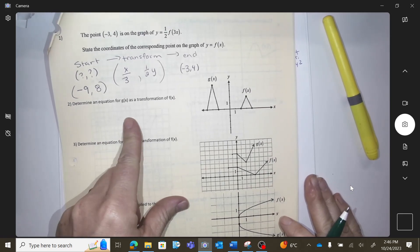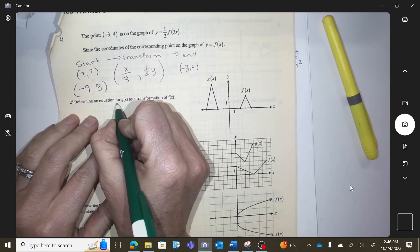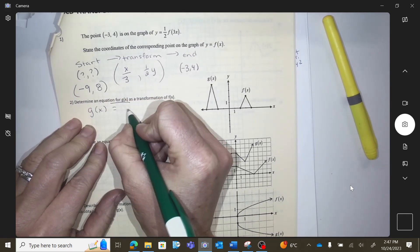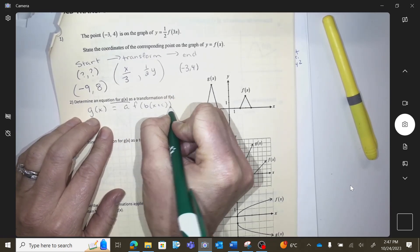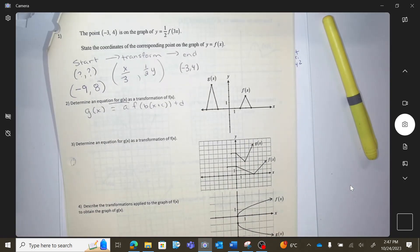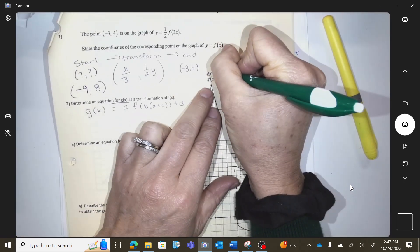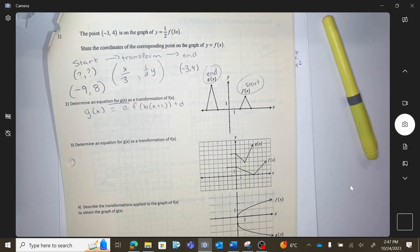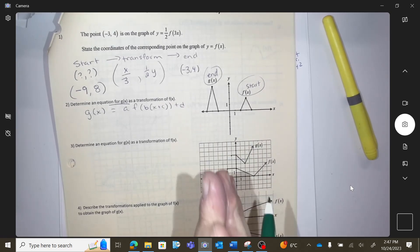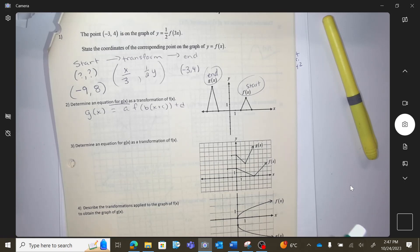So we're going to do the same thing we did in our notes here. We're going to get the equation for g of x as a transformation of the f of x. So if you want, we start at f and we get to the g. So I'm going to think about the order. From f to g, do you see anything that would be a reflection, a compression, or a stretch?